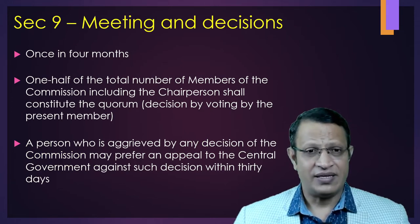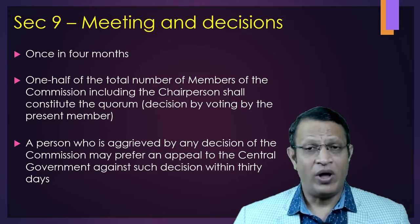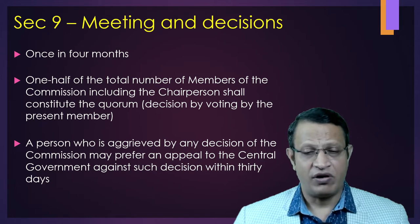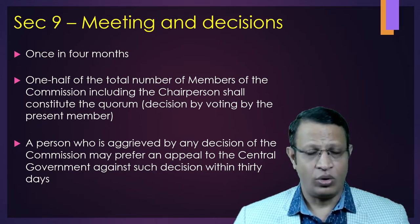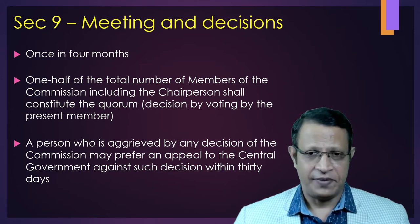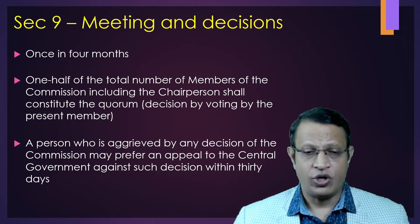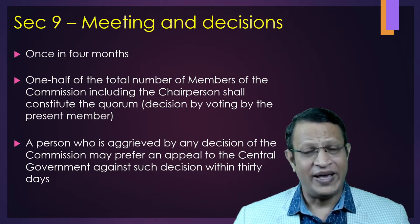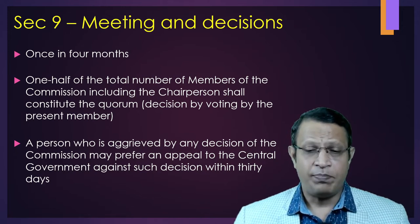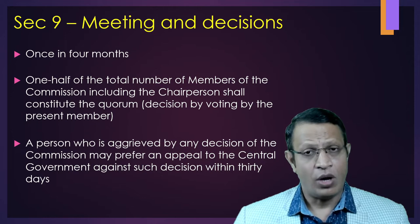Section 9 talks about NMC meetings and decisions. The NMC will meet at least once in four months, and 50 percent of the total number of members along with the chairperson shall form the quorum. Decisions will be based on voting. A person aggrieved by any decision of the NMC can prefer an appeal to the central government within 30 days.